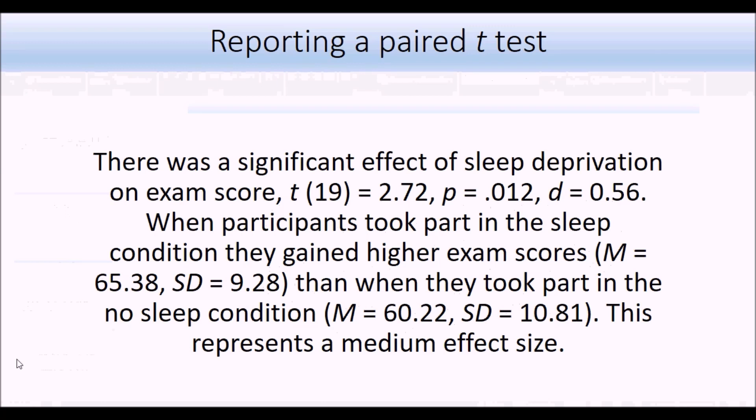So one final note on reporting. You can report a paired t-test in pretty much the same way as you reported the independent t-test. The only thing really to take into account are the changes in the degree of freedom, say we're just doing the total sample minus one this time. But other than that, as long as you've got the test statistics, including an effect size, the mean scores and standard deviations, and a brief interpretation of what this means. So when participants took part in the sleep condition, they gave higher exam scores than when they took part in the no sleep condition, and this represents a medium effect size.